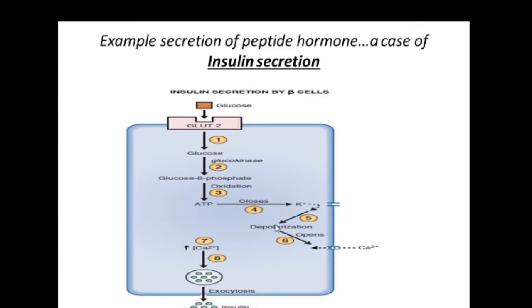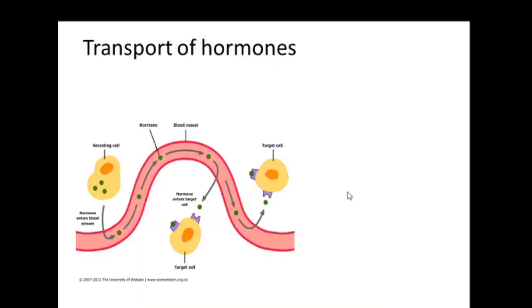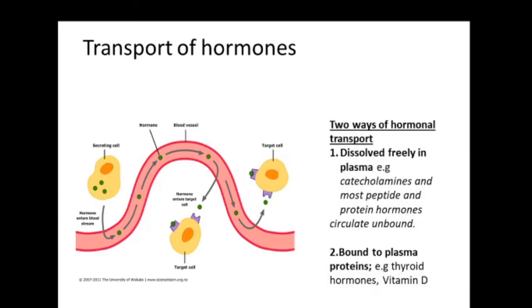This is just an example of secretion. Many hormones, like the peptide hormones, are secreted by exocytosis depending on the type of stimulation. In terms of transport, the secreting cell releases the hormone into circulation until it reaches the target. There are two ways hormones are transported: they can dissolve freely in plasma — such as catecholamines and most peptide and protein hormones — or they can be bound to plasma proteins, like thyroid hormones and vitamin D. Plasma is a watery component of blood.